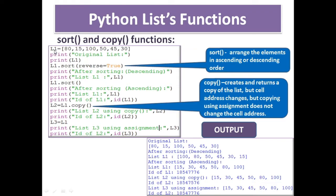Let us see through an example. L1 is a list having 80, 50, 100, 50, 45, 30. I print the original list. After using sort with reverse equal to true, descending order sorting is applied — the output is 100, 80, 50, 50, 45, 30. Then using L1.sort() without parameters, by default reverse is false, so ascending order sorting gives 15, 30, 45, 50, 80, 100. Ascending order sorting is done.